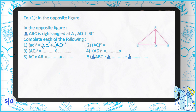Question two: AC² equals what? By the Pythagorean theorem applied to the big triangle ABC: AC² = BC² − AB².